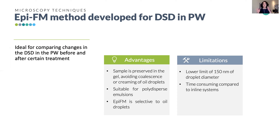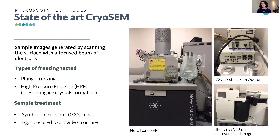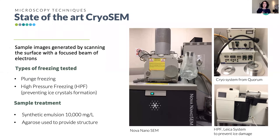Now for the electron microscopy techniques. In scanning electron microscopy, images are produced by scanning the surface with a focused electron beam. We used cryogenic fixation because water is the most abundant constituent in the sample and it is key to preserve the oil droplet morphology. We used two freezing methods: plunge freezing and high-pressure freezing. In high-pressure freezing the sample is rapidly chilled while exposed to high pressure, avoiding the formation of ice crystals. For tuning, we used a synthetic emulsion with higher oil concentrations and gelled the sample before freezing.